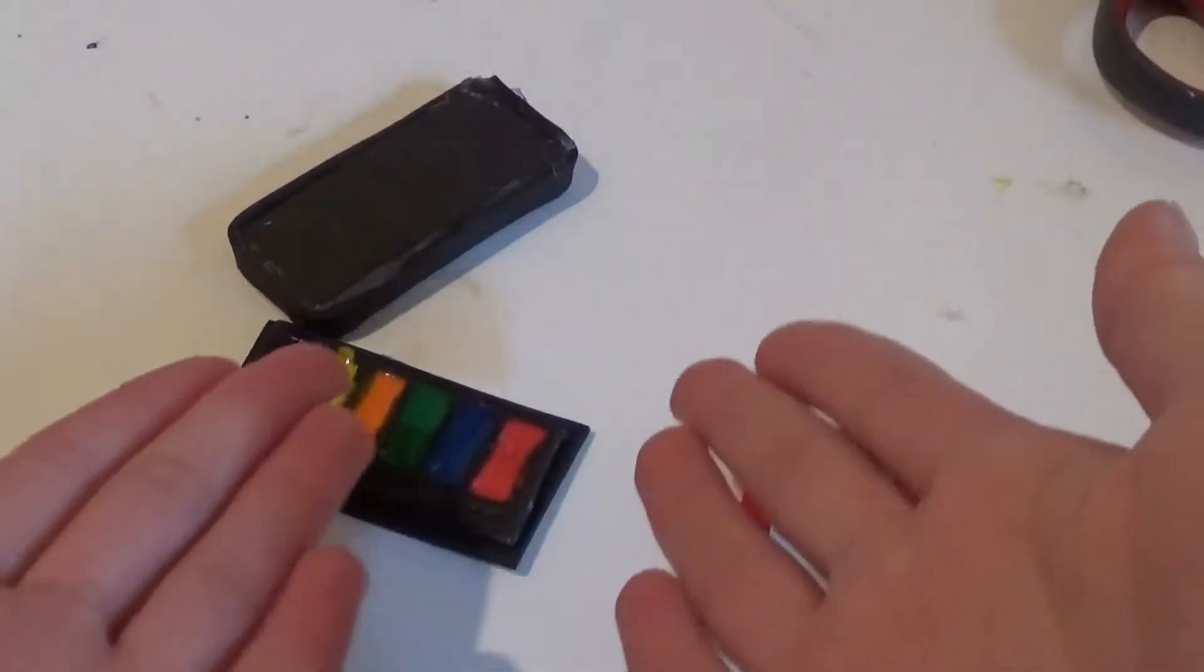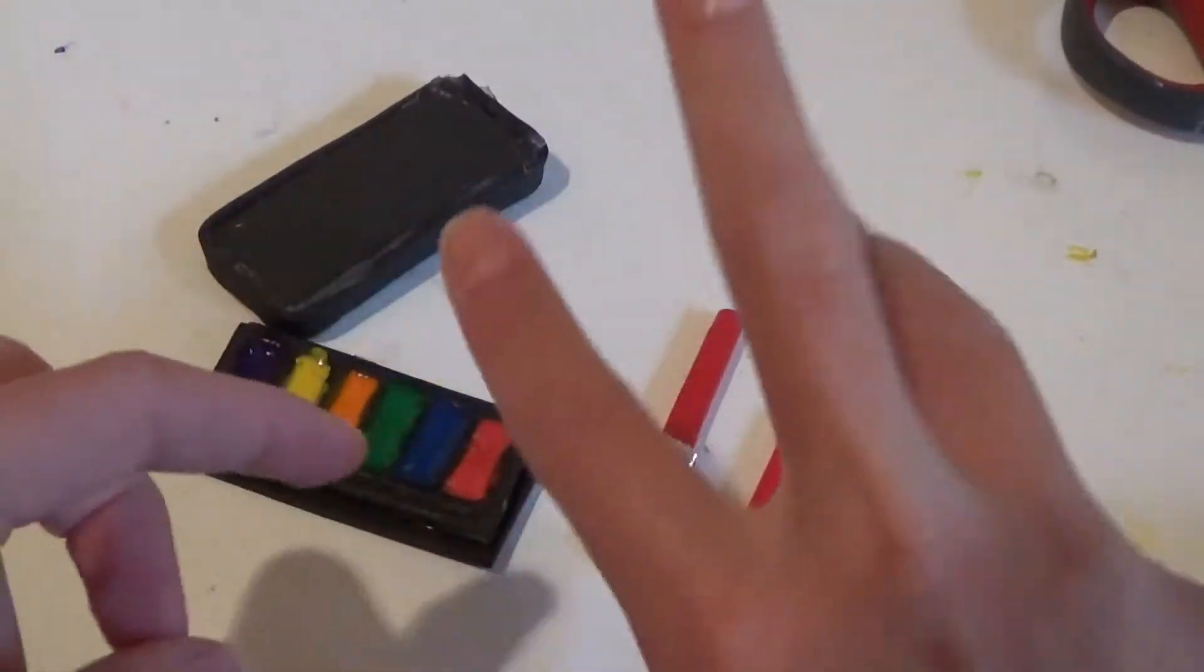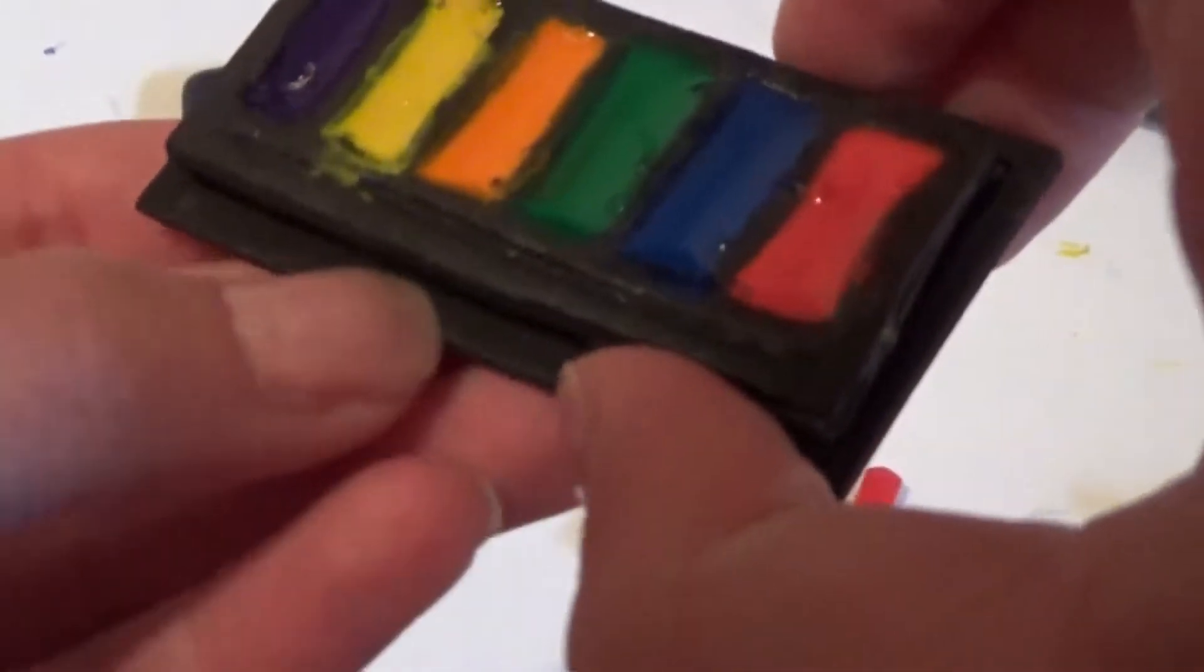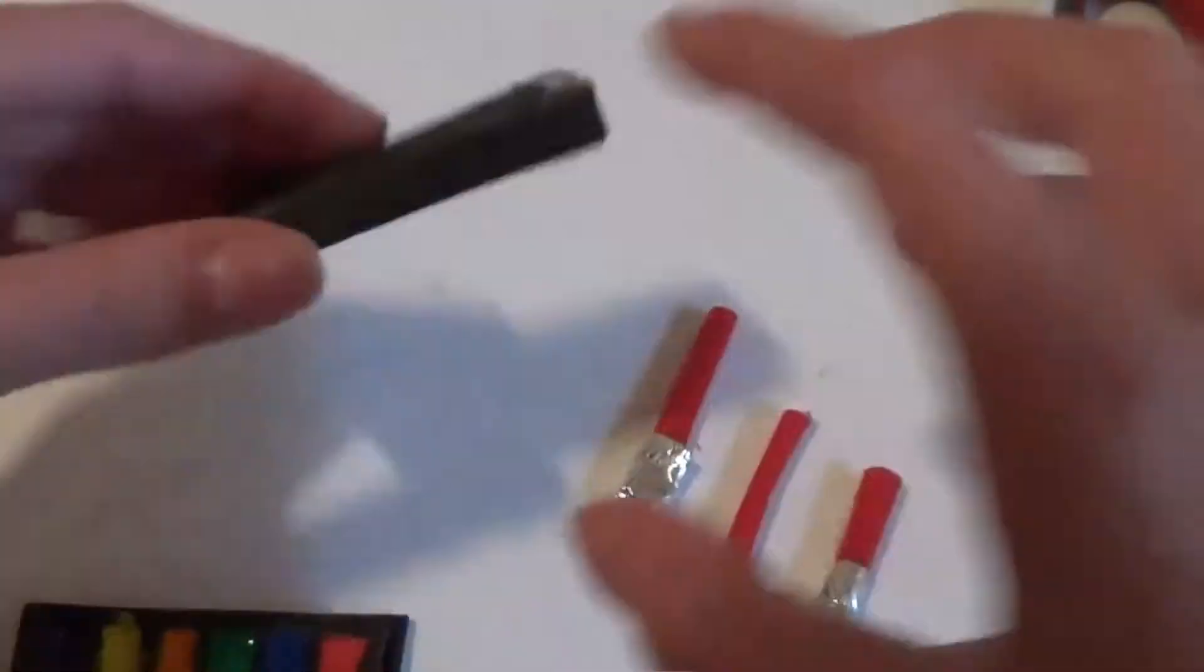So here I'm showing you what the paint palette looks like. The paintbrushes—there's three. And then there's the watercolor.